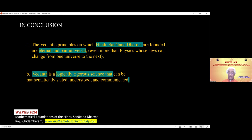In conclusion, in the short time available, I have attempted to show that the Vedantic principles on which the Hindu Sanatana Dharma are founded are eternal and universal. Vedanta is a logically rigorous science that can be mathematically stated, understood, and communicated. Mathematical spirituality, while it only reaffirms Vedantic teachings, has given us some elegant new visual ways to discuss and communicate these teachings. Few religions will dare claim that they are founded on a mathematical science — but the Hindu Sanatana Dharma can confidently make that claim. This is something more Hindus should know and they could be justly proud of.